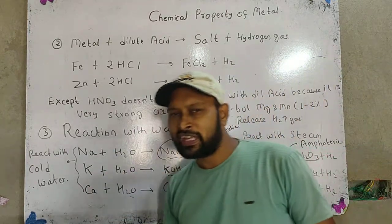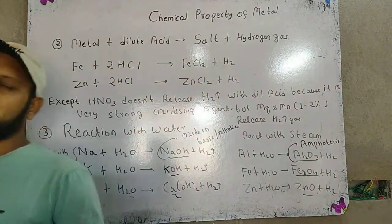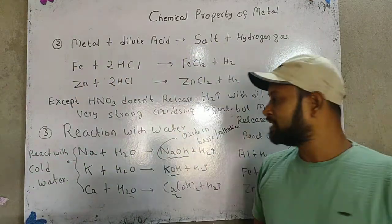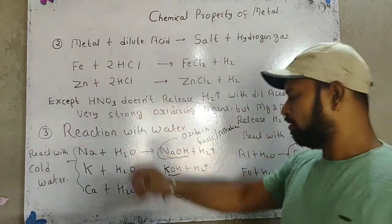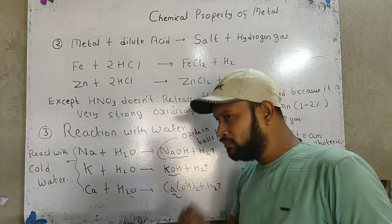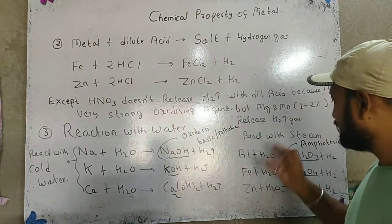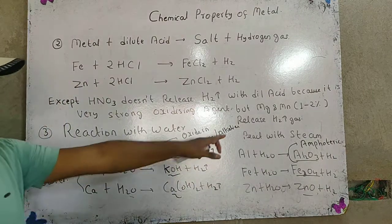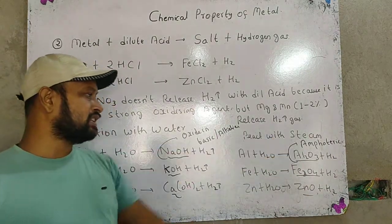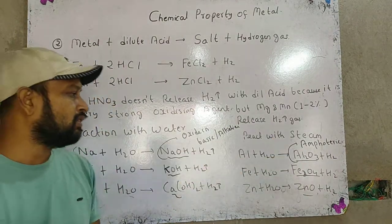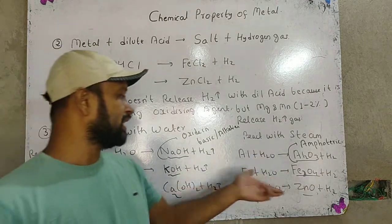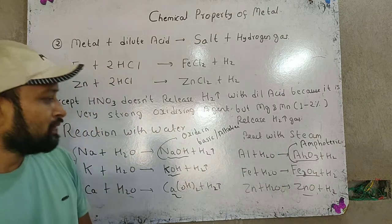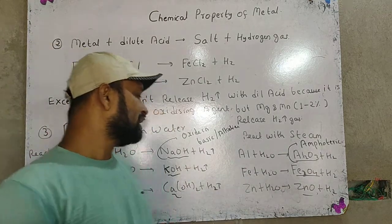Mostly sodium and potassium are very highly reactive elements, so they are stored in kerosene — we already discussed this in our previous video because they undergo very violent reactions. When metals react with steam, aluminium reacts with steam and forms aluminium oxide, and iron reacts with steam and forms iron oxide.